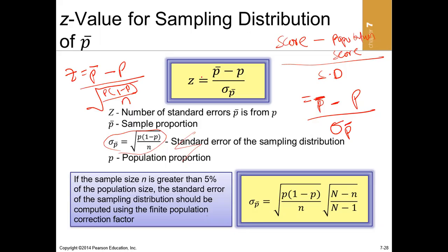The z-score of a proportion tells how many standard deviations the proportion is away from its mean, where the mean of all sample proportions is the population proportion. If you have a large sample size and you are selecting without replacement, you may want to adjust the standard error with a finite population correction factor.